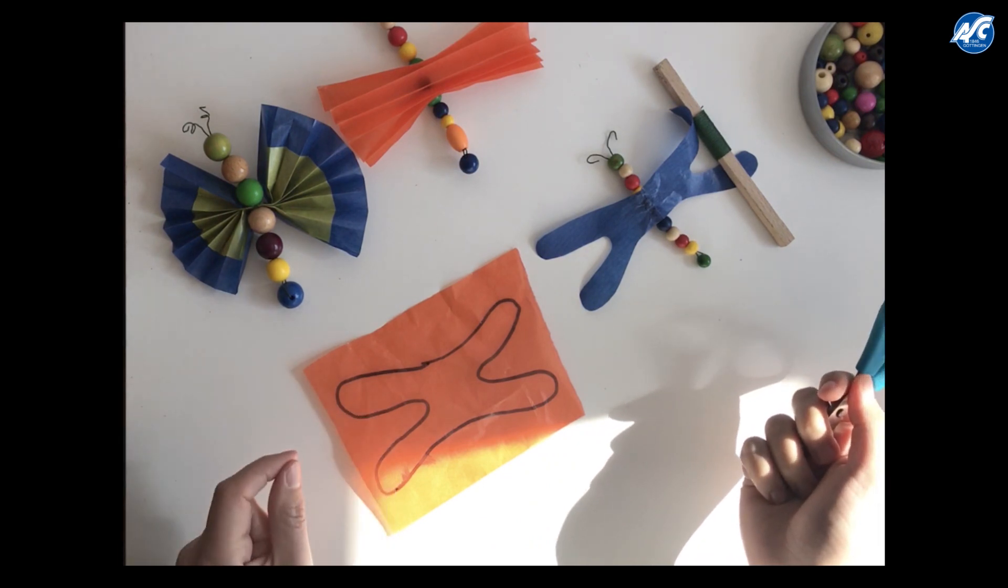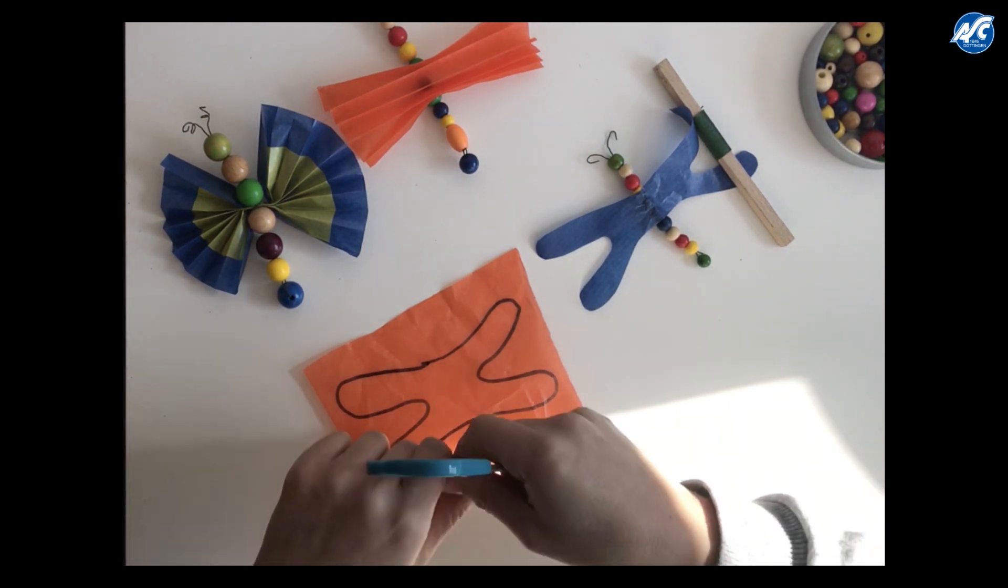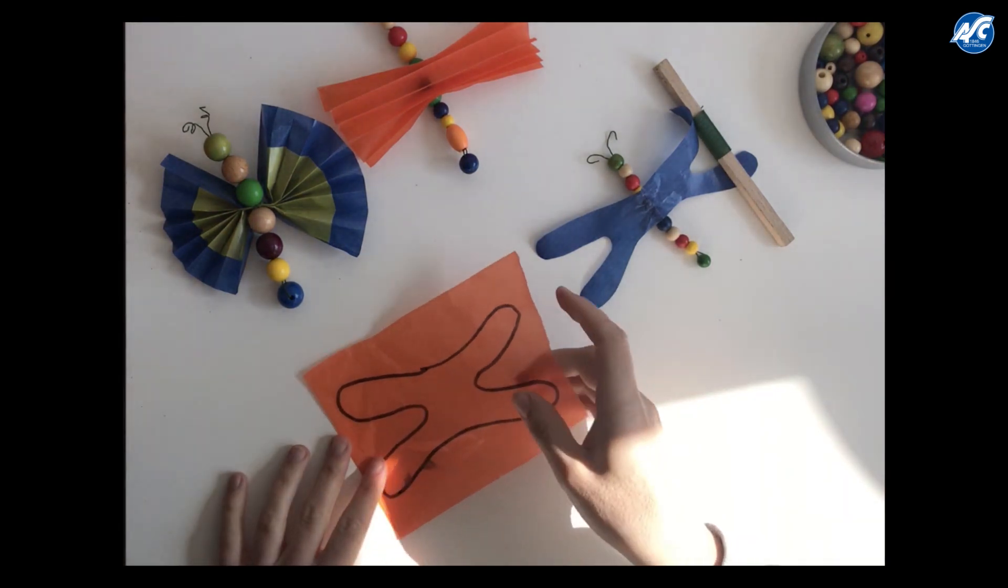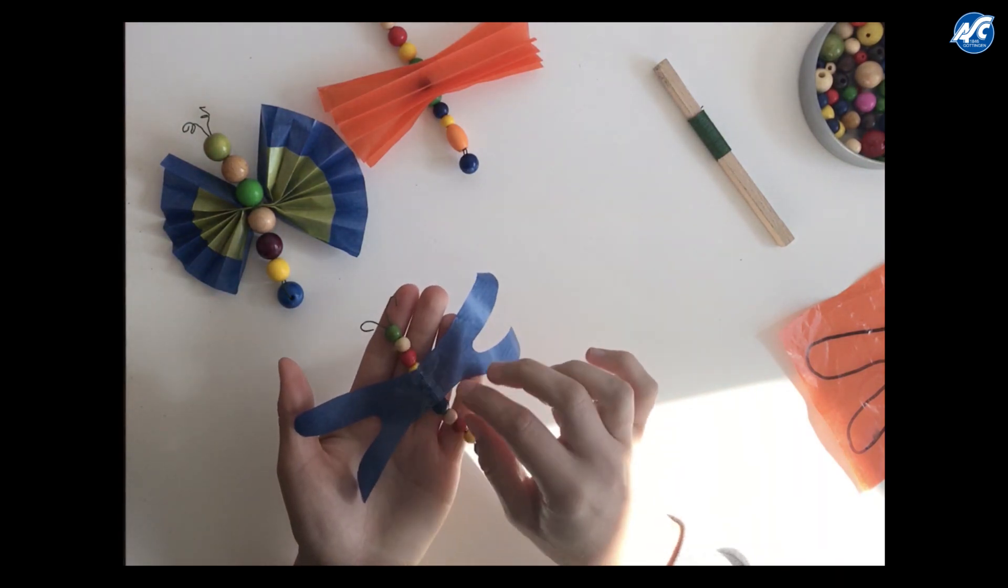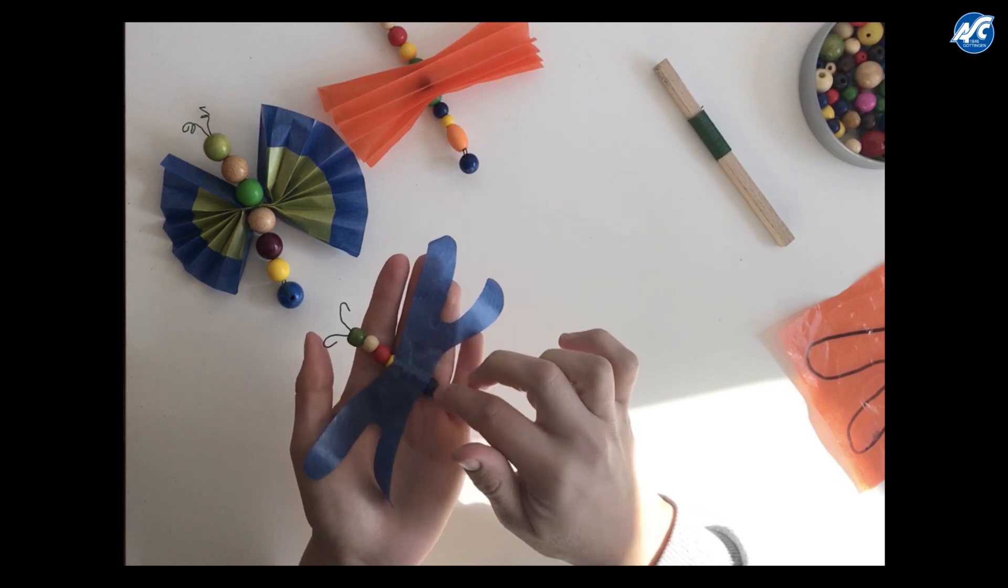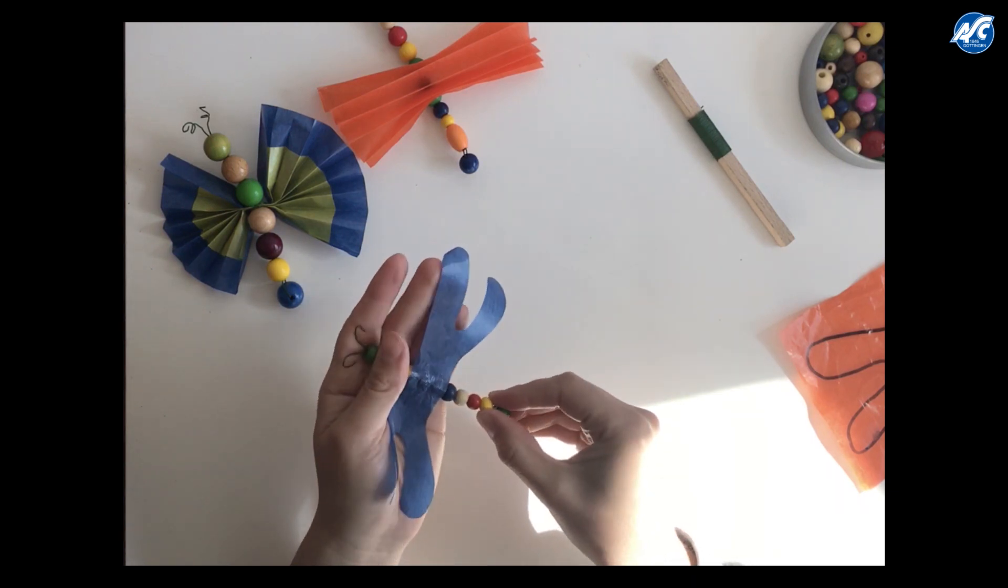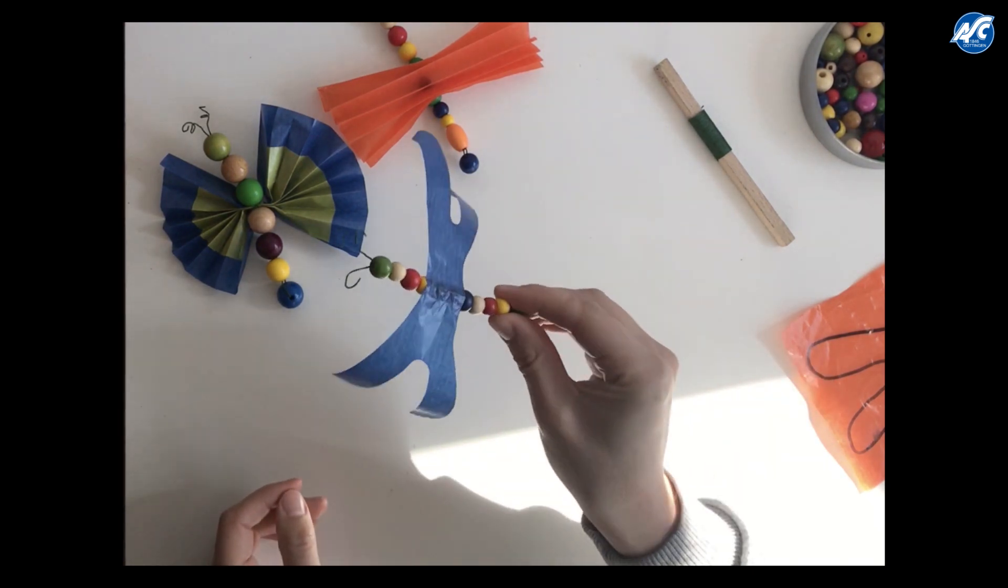But if you want to prickle the transparent paper, please make sure that you're very, very careful so it does not tear. And when you cut this, you can also just take some glue and put it on to the beads that are on your dragonfly already. Then you press it on, you let it dry and then you're done.